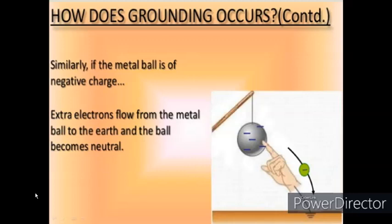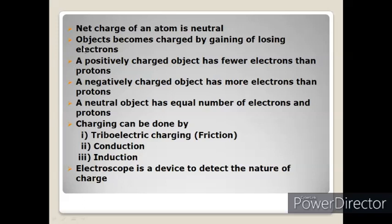Now a simple recap of what we have learned: the charge of an atom is neutral. Objects become charged by gaining or losing electrons. A positively charged object has fewer electrons than protons; a negatively charged object has more electrons than protons; a neutral object has equal numbers of electrons and protons. Charging can be done by triboelectric charging, conduction, and induction. An electroscope is a device used to detect the nature of charge.